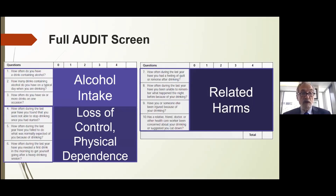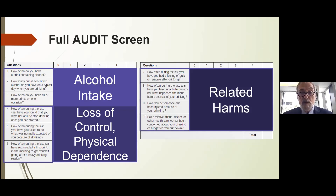The full AUDIT assesses alcohol intake — for example, how often do you have a drink containing alcohol? It covers loss of control — how often during the last year were you not able to stop drinking once you had started? And related harms make up the last four questions — for example, how often during the last year have you had a feeling of guilt or remorse after drinking? It captures the past year.